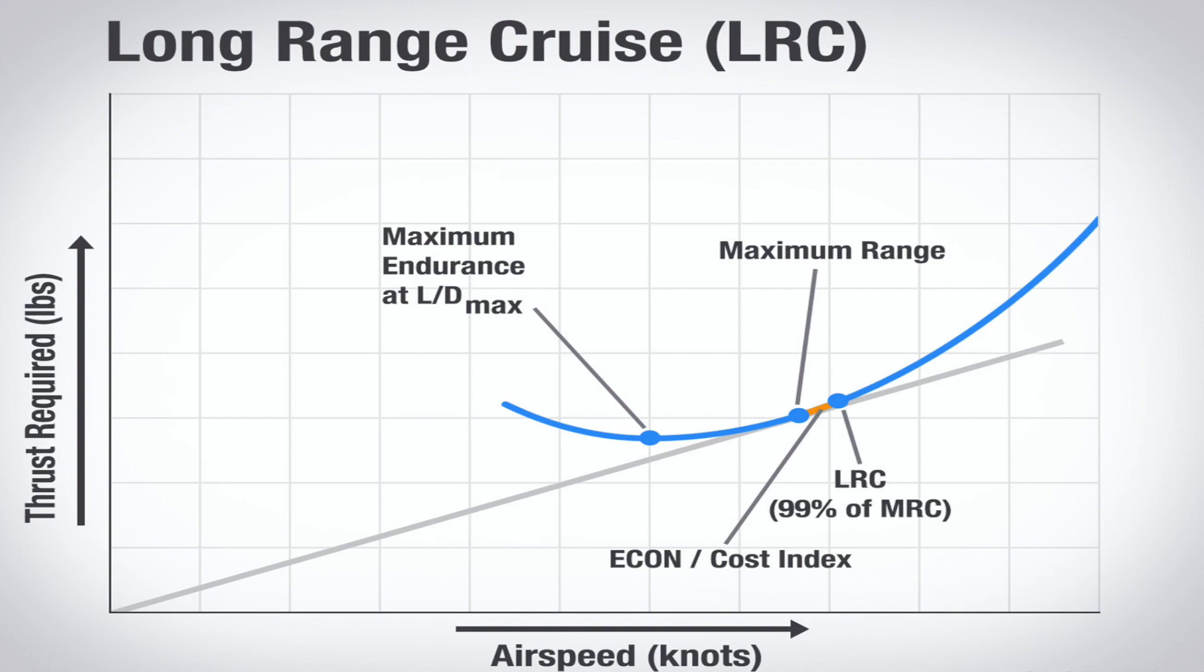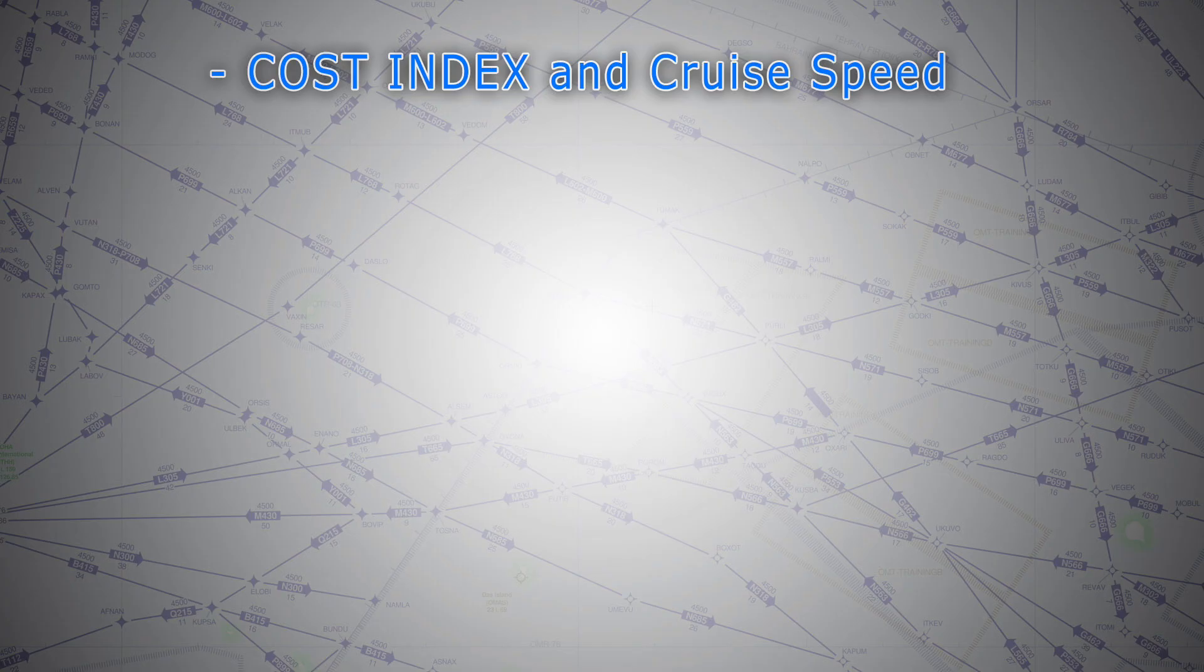It helps to add that the lower the cost index number, the closer we fly to the maximum range or MRC. The higher the cost index, the closer we fly towards LRC. And any number in between results in a speed that is between MRC and LRC.